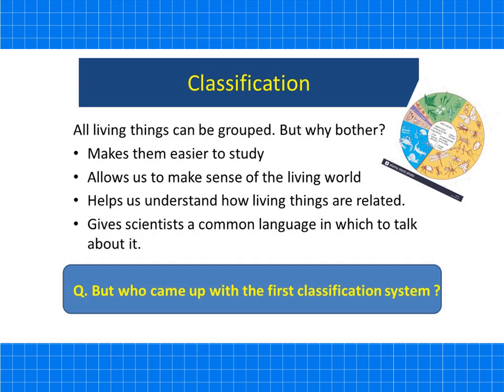All living things can be grouped — but why bother? It makes them easier to study, allows us to make sense of our living world, helps us understand how living things are related — including how humans are related to every other living thing on this planet. And it gives scientists a common language in which to talk about organisms.